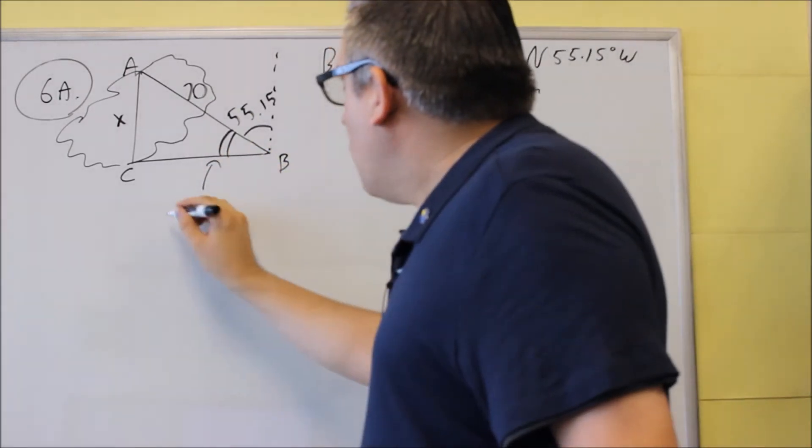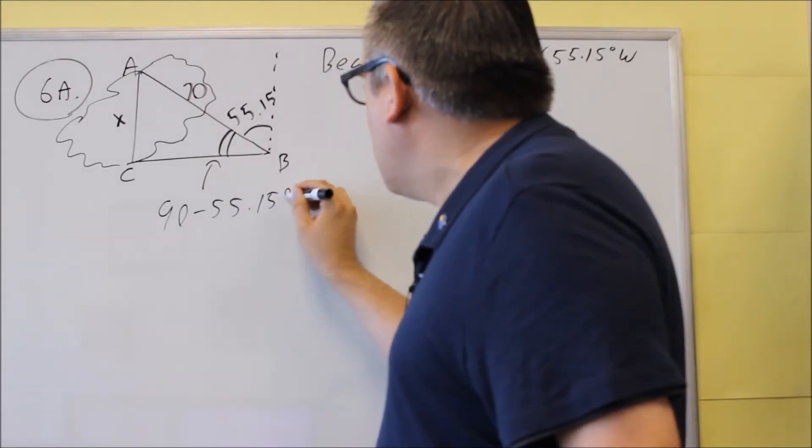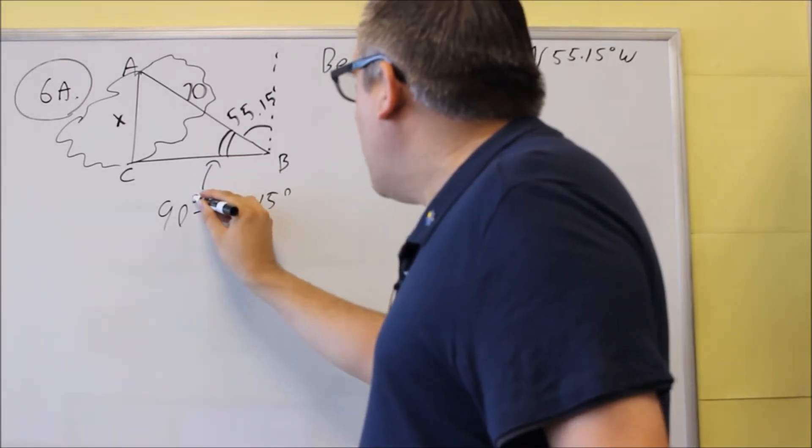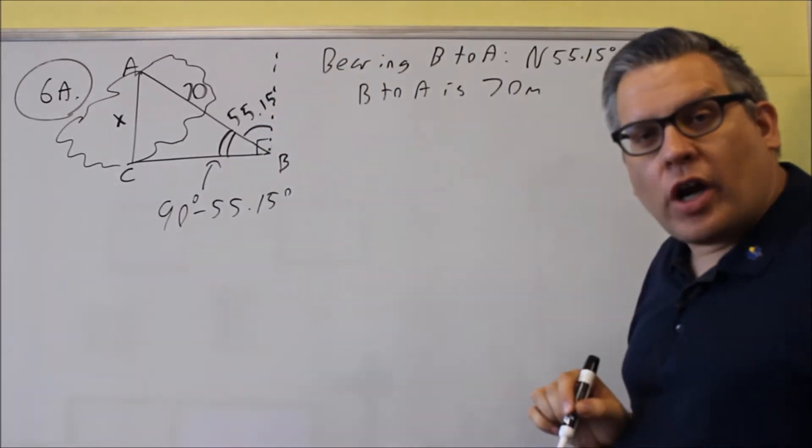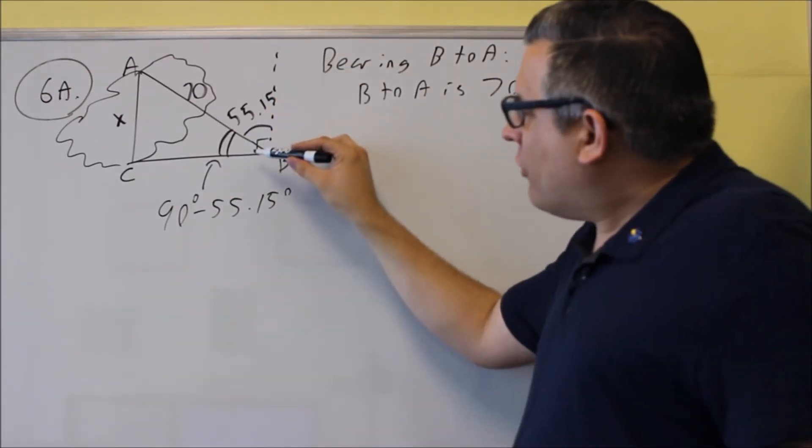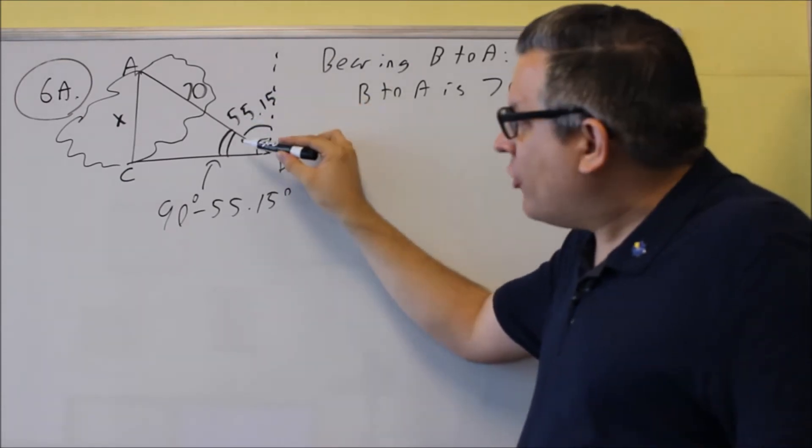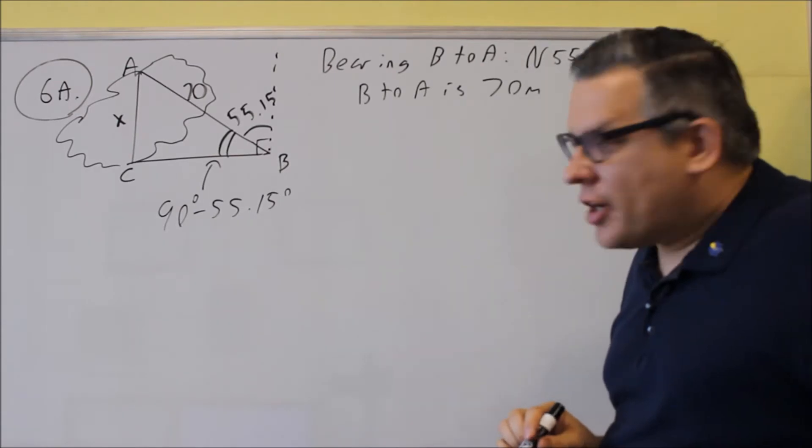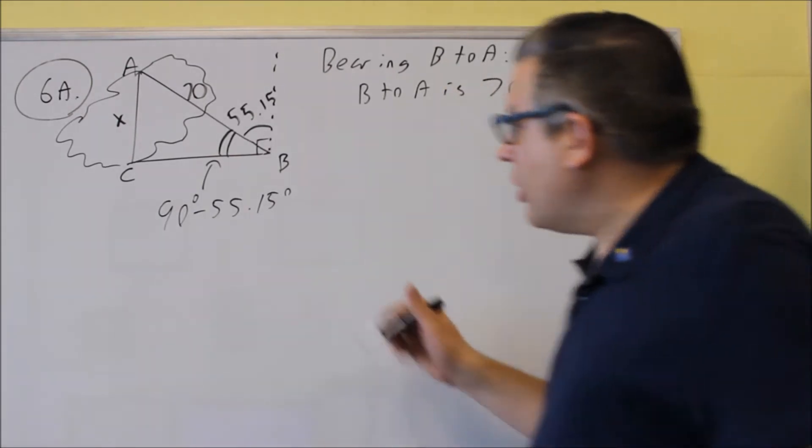To get that angle, what you're going to do is you're going to take 90 minus 55.15. Why is it 90? Because this side right here would be a right angle. And so if this is 90 all the way across and you subtract the 55.15, you're going to get the angle left over inside the triangle. So we have to do that 90 minus 55.15.